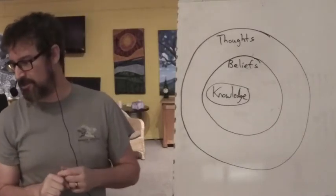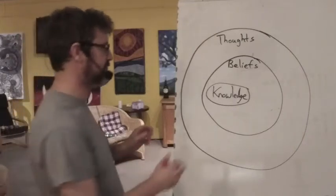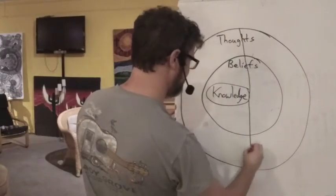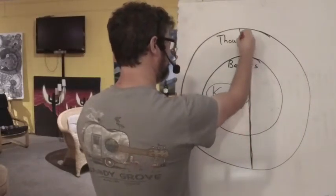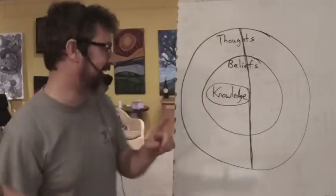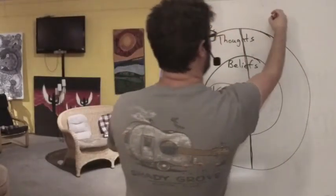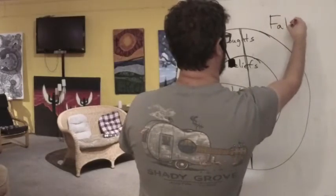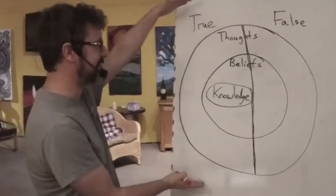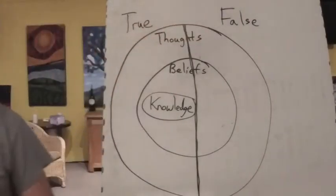Now I'm going to do something with this drawing that's going to disrupt it. We're going to introduce the idea of truth. Truth is going to split this down the middle. I thought it was pretty nifty on my part though, look, knowledge is only on one side. Basically on the left side of my drawing are all things that are true. On the right side of my drawing are all things that are false.